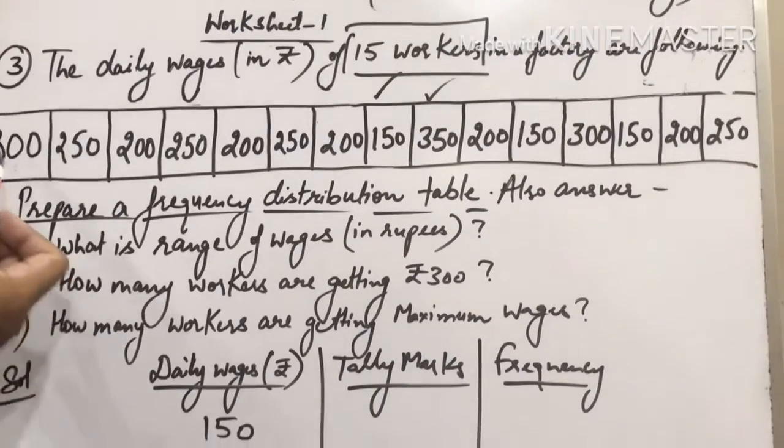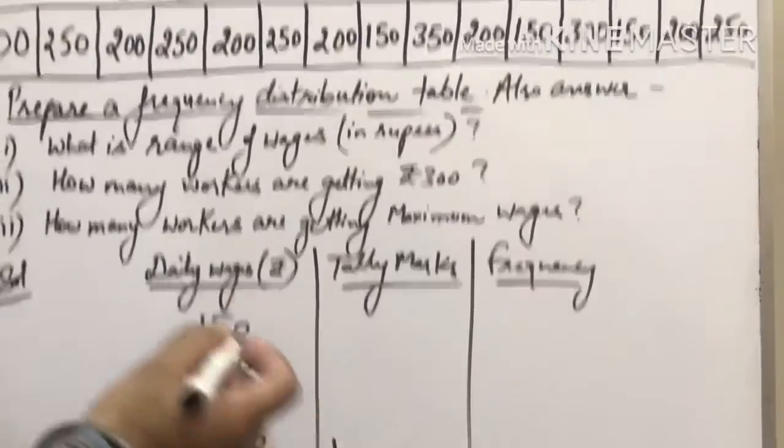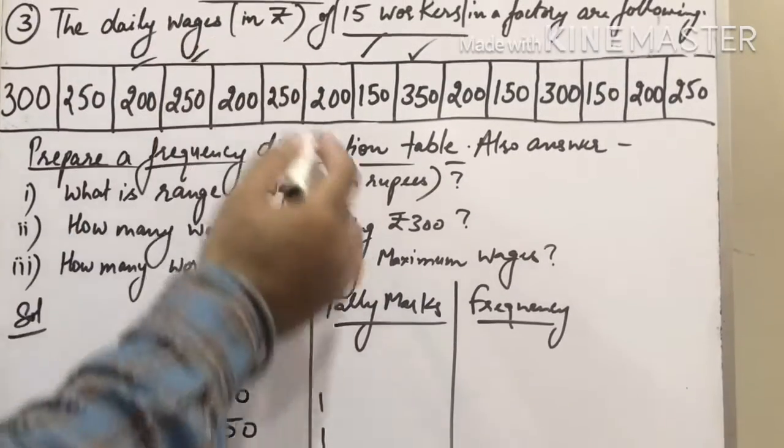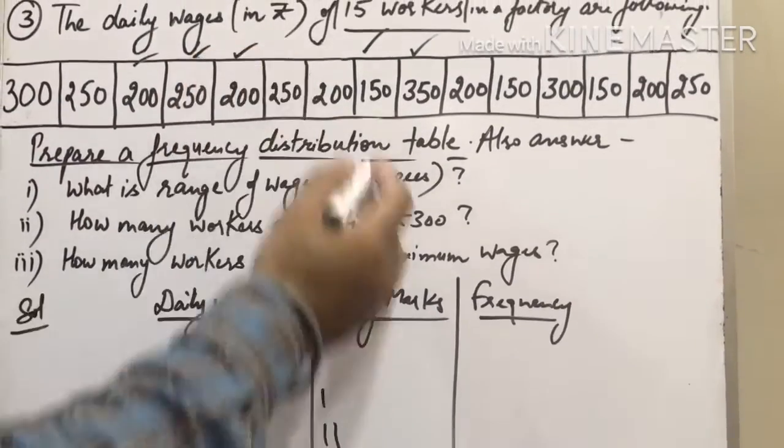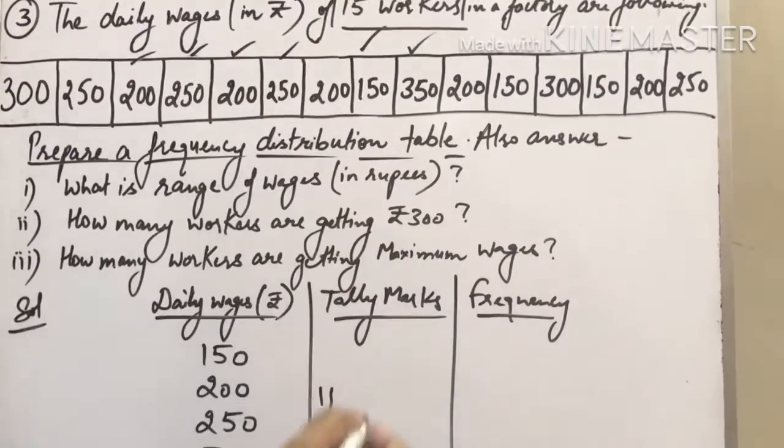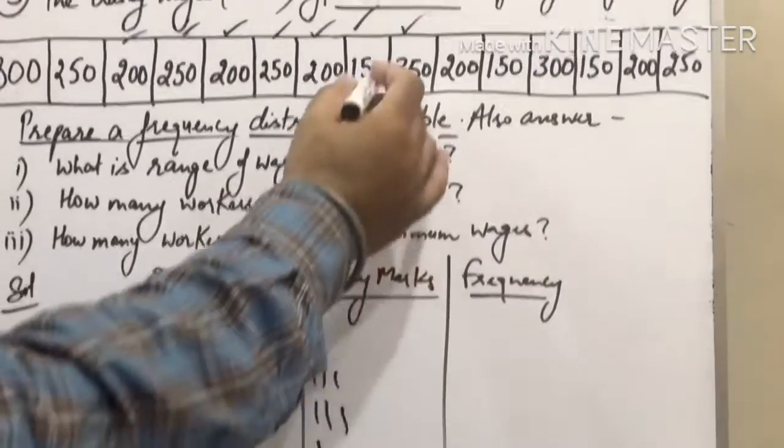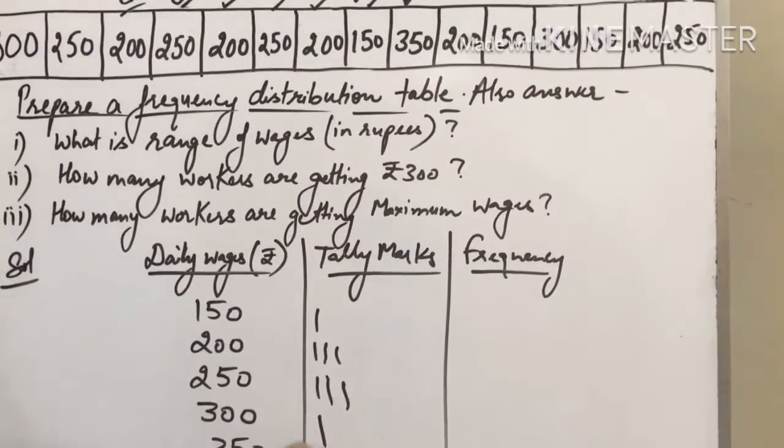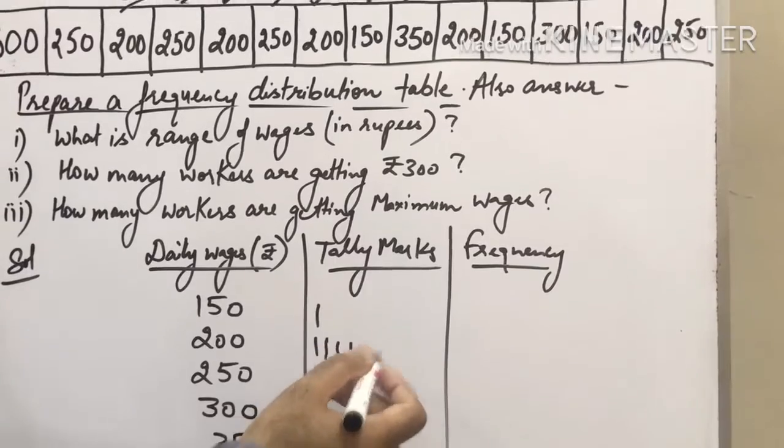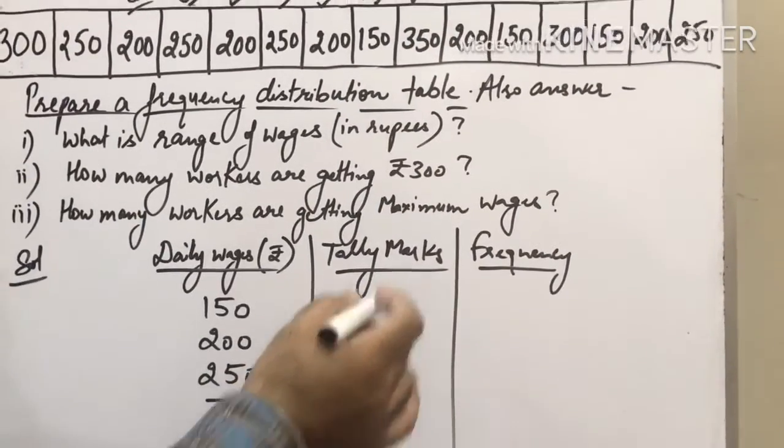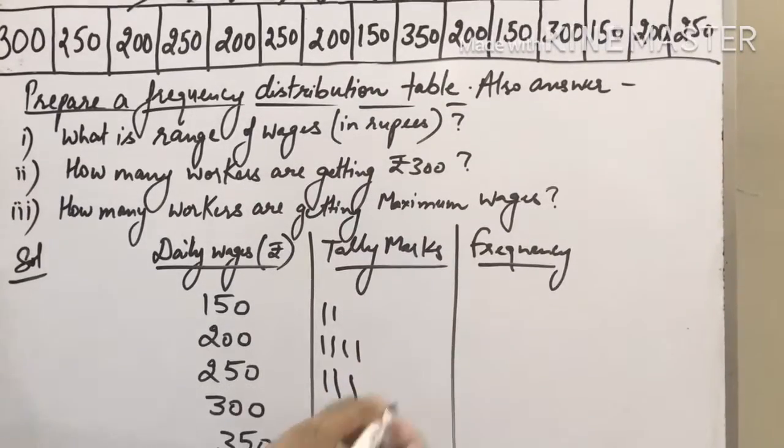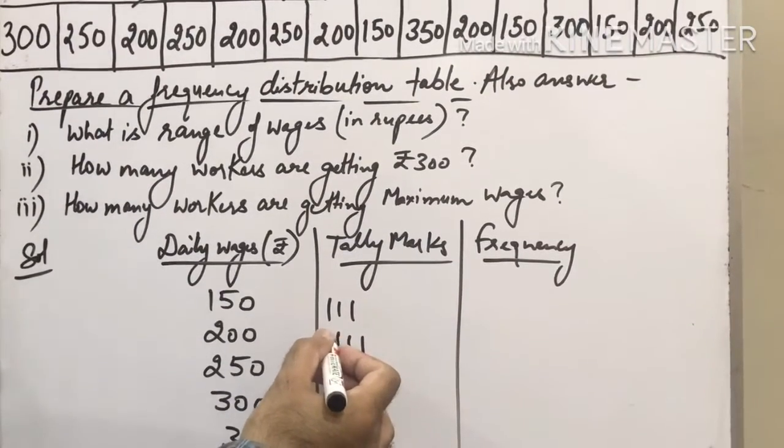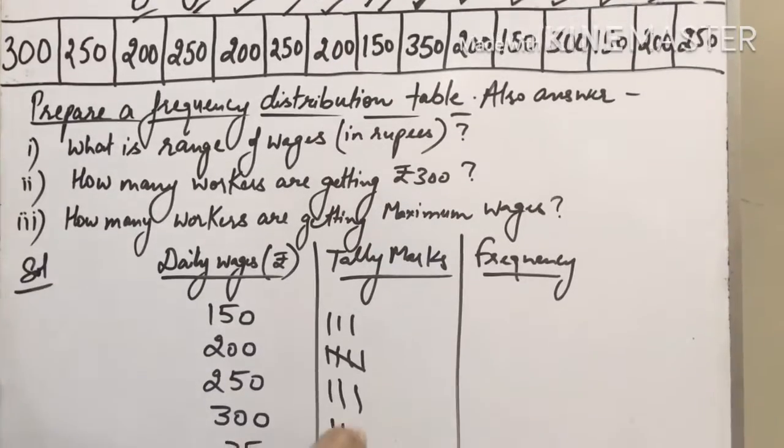Let's start with the first one. 300, so tally mark at 300. Then 250, again 200, then 250, 250, 200, 200, 250, 200, 150, 350, 200, 150, 300, 150 again. 200, 200—so 200 already happened four times, so fifth time. Then 250, so 250 one more time.